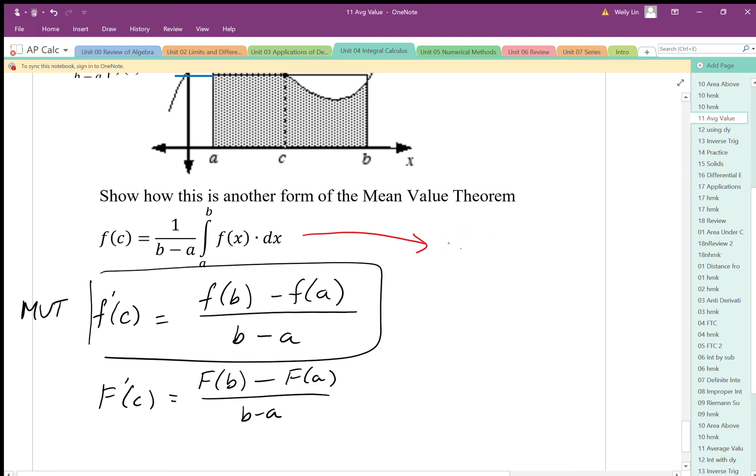So, right like this, f of c is equal to big F of b minus big F of a all over b minus a.